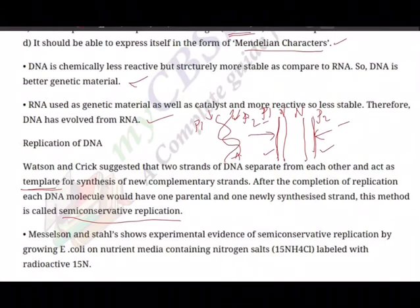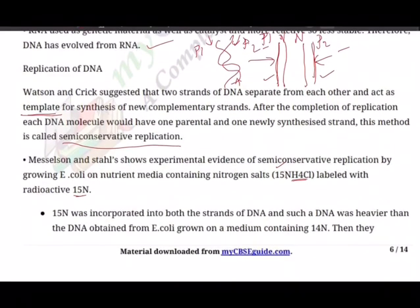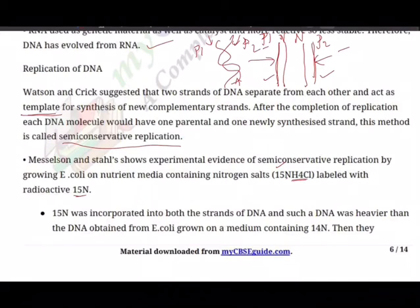Meselson and Stahl provided experimental evidence of semi-conservative replication. They grew E. coli on nutrient media containing nitrogen salts (NH4Cl) labeled with heavy radioactive N-15. Since nitrogen bases contain nitrogen, N-15 was incorporated into both strands of DNA instead of the normal N-14. This produced a DNA that was heavier than DNA from E. coli grown on normal N-14 medium.